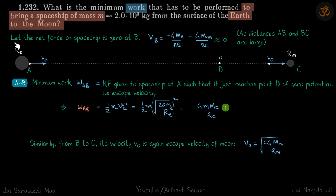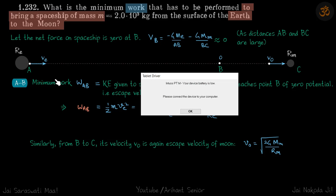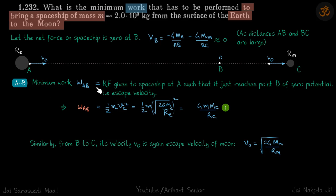So let the net force on the spaceship be zero at B. The potential at B is approximated to zero since distances AB and BC are quite large. During A to B, the minimum work done is the kinetic energy given to the spaceship at A such that it just reaches point B of zero potential — same as infinity. So it must be given the escape velocity. Work done from A to B equals (1/2)·m·v_E². Since v_escape = √(2·G·M_E / R_E), solving gives: W_AB = G·m·M_E / R_E.